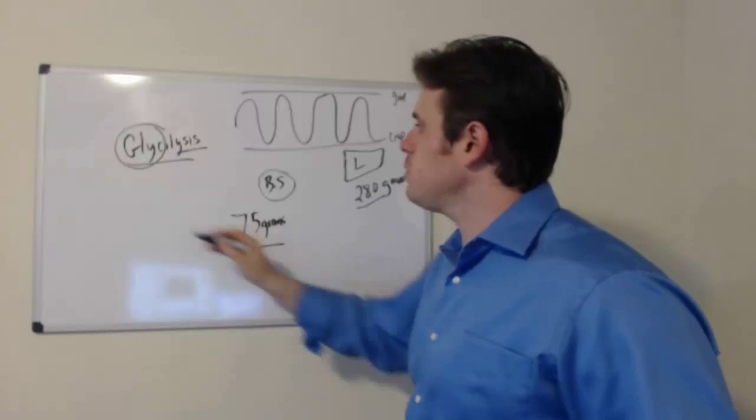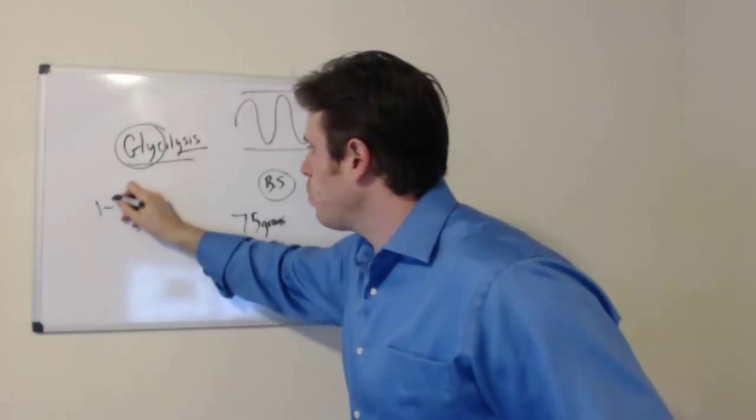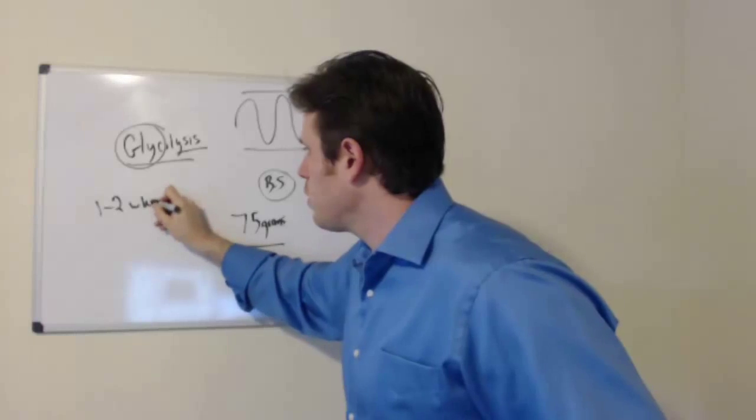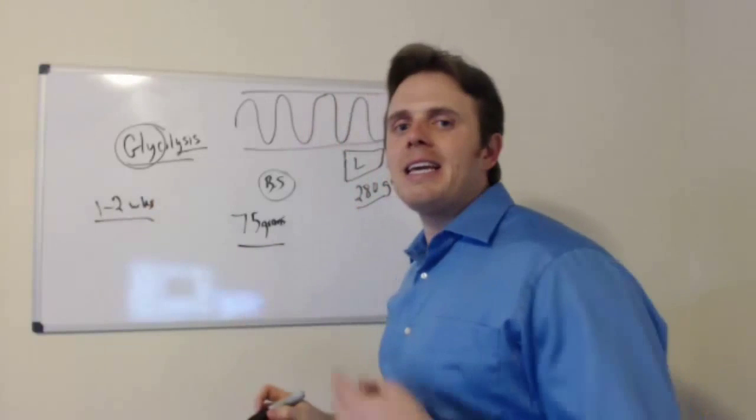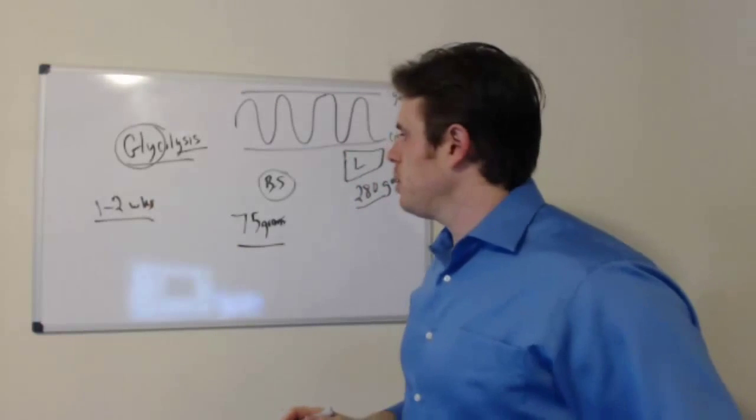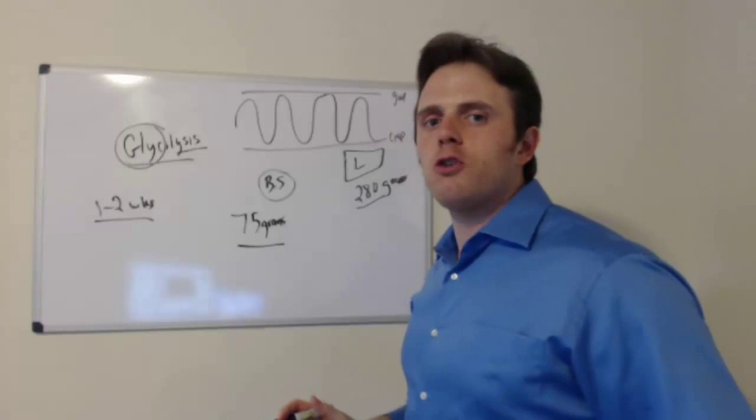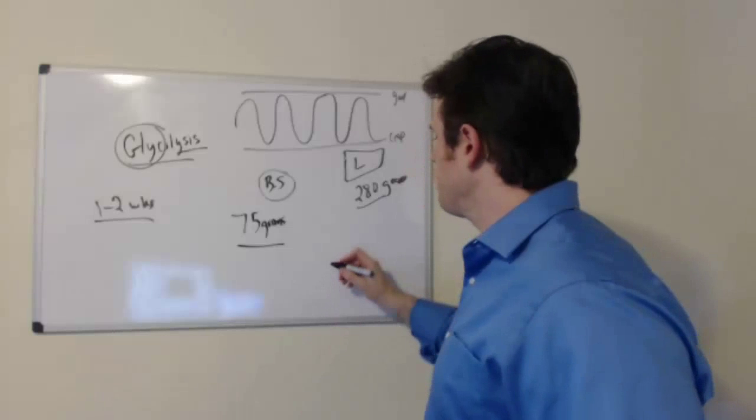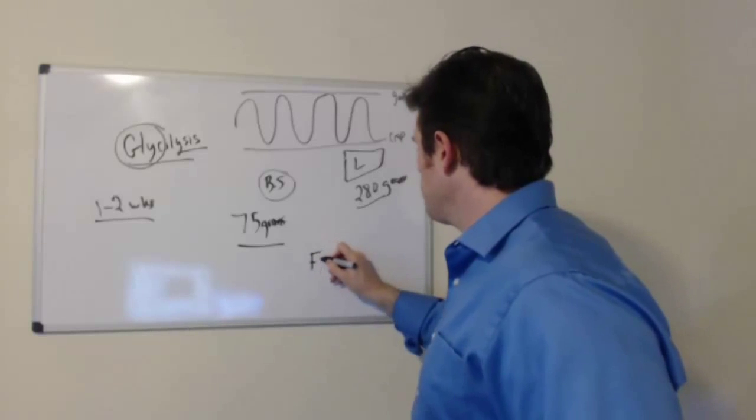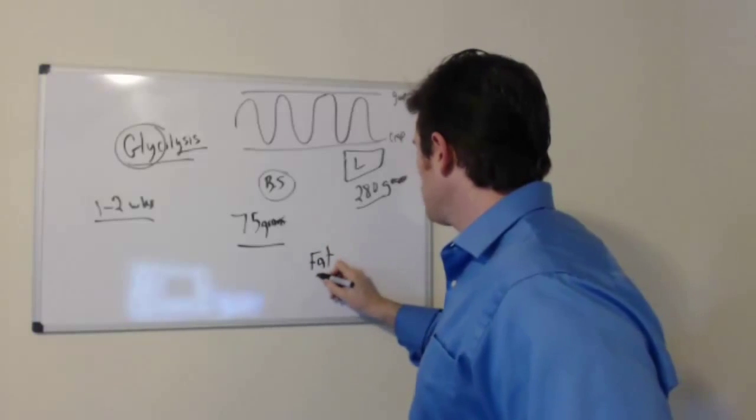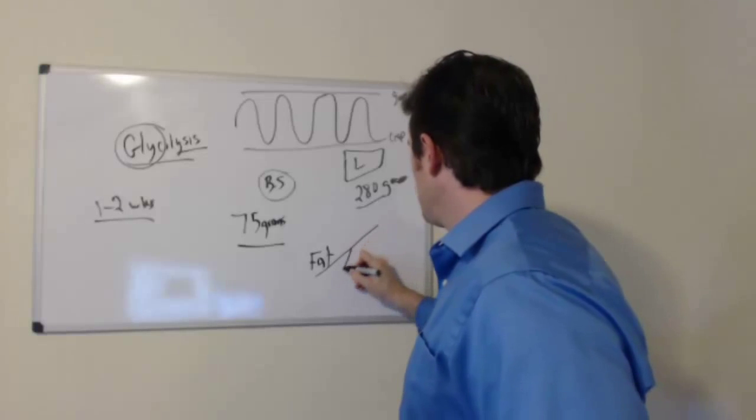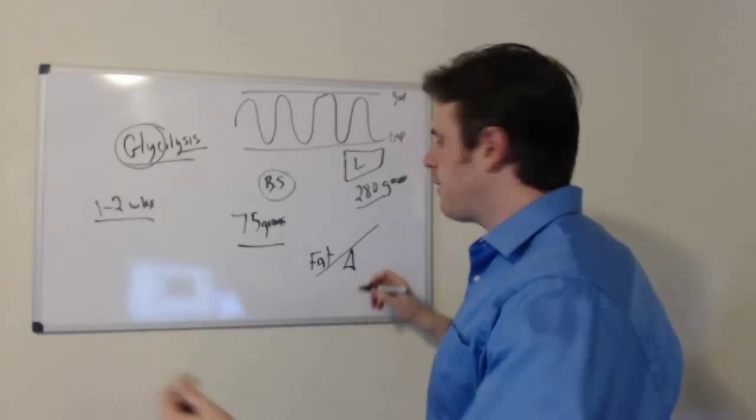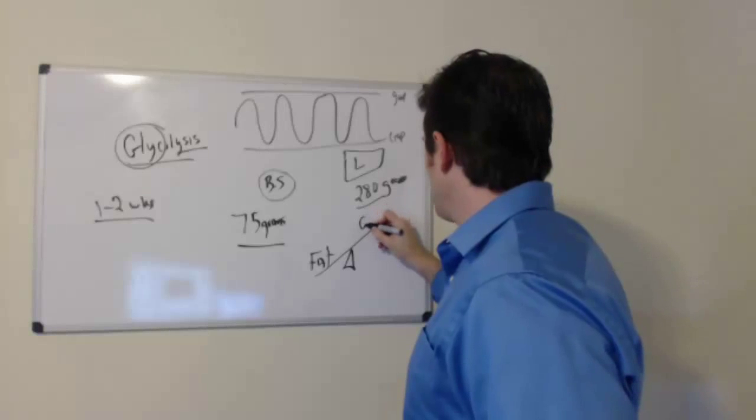So what happens in that first one to two weeks of dieting is we go through a process known as keto adaptation. What's starting to happen is we're starting to rely more on fat for fuel versus sugar. So we have fat down here and you can see we're starting to rely more on that and this is a little seesaw we have down here and we start adding glucose up here.